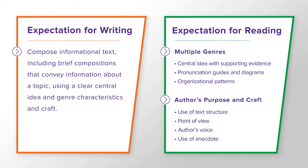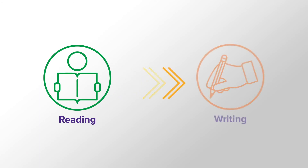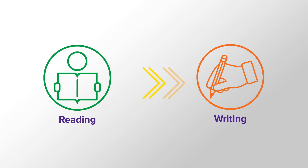They learn from studying the structure and characteristics of informational text while they're reading the text. That takes us back to the student expectations connected to reading and understanding multiple genres in diverse written text. Students learn to recognize and understand informational text structure through their experiences in reading, and then they fully conceptualize those understandings by implementing or using them in their own writing. This is an example of teaching across the literacy strands and helps to illustrate the philosophy of the 2017 student expectations.